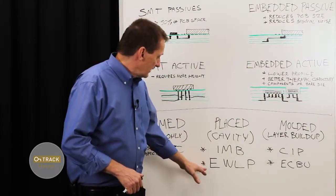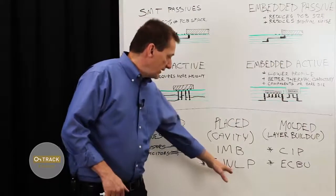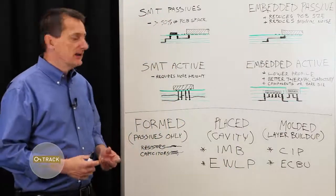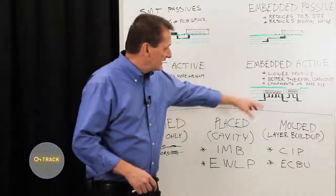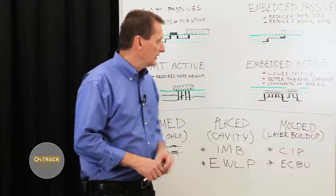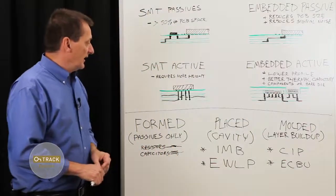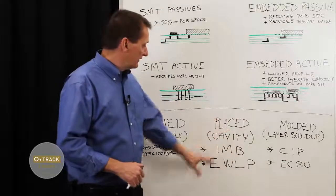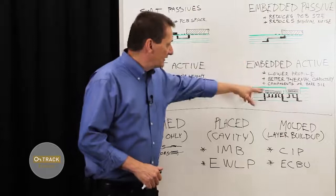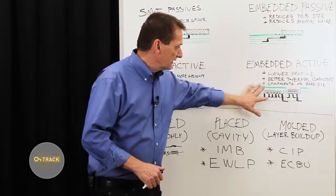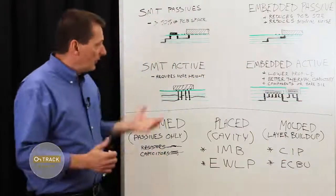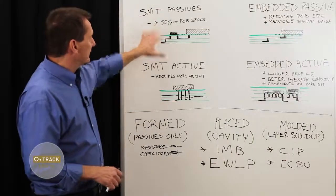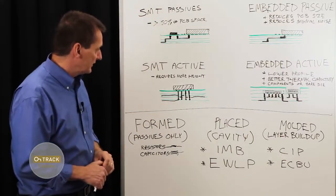Now the other type is embedded wafer level package, and this is where we take a bare die and place that in a cavity and likewise interconnect with blind and buried vias. So this is very commonly used, can be used for both actives and passives to achieve this burying of the components within the board. Overall height is much less, and you're saving the space as well on the passives.